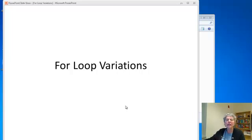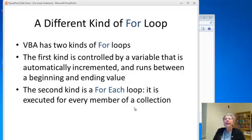In this video, we're going to look at a couple of variations on for loops. So first of all, so far we've looked at for loops where you have a control variable that starts at some number, is incremented by one, and ends up at some other number.